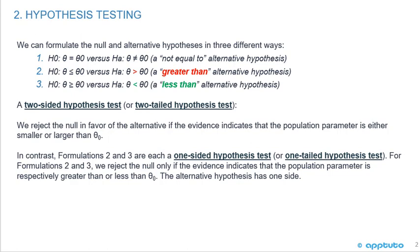In contrast, formulations two and three are each a one-sided or one-tailed hypothesis test. For formulations two and three, we reject the null only if the evidence indicates that the population parameter is respectively greater than or less than. The alternative hypothesis has only one side — that's why it's highlighted in bold red and bold green. We're only looking at one side of the tail, so it's single-sided.